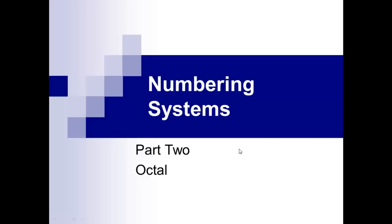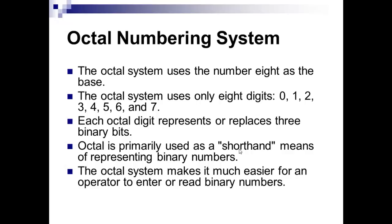We continue with part two of our numbering systems lecture covering the octal numbering system. You should have already read through the lecture material and watched the first video. Octal is a base-eight numbering system, so the numbers go from zero to seven. Each octal digit represents three binary digits — the number seven in binary is one-one-one, which is three bits of information.